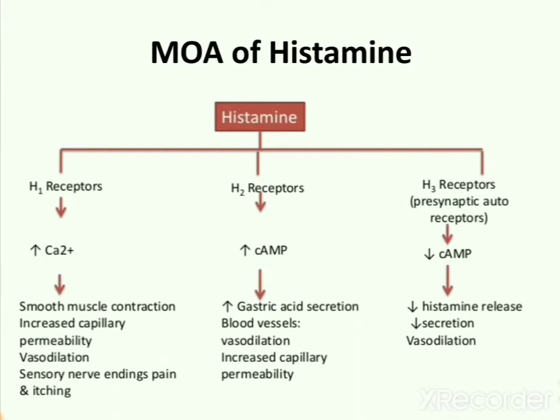On H2 receptors, histamine causes increase in cAMP. Here, cAMP stands for Cyclic AMP (Cyclic Amino Monophosphate), a second messenger which is very important in many biological processes and is used for intracellular signal transduction mechanism. Increasing the concentration of this second messenger causes increase in gastric acid secretion, vasodilation of blood vessels, and increased capillary permeability.